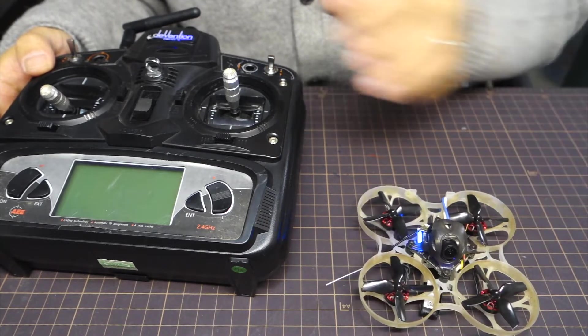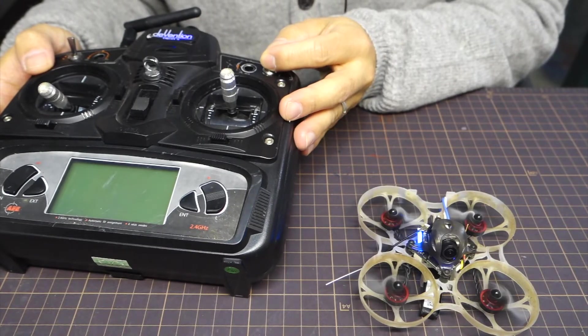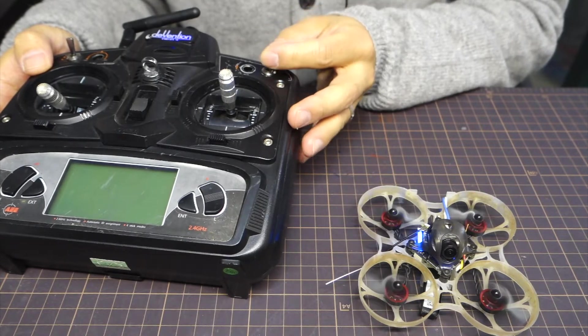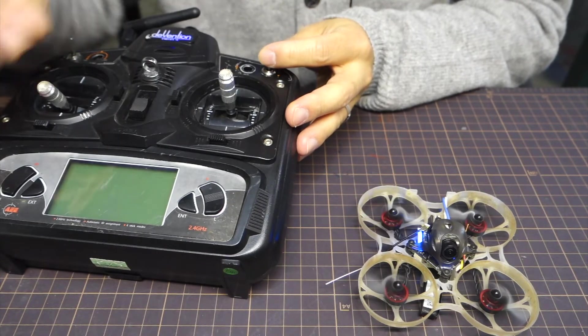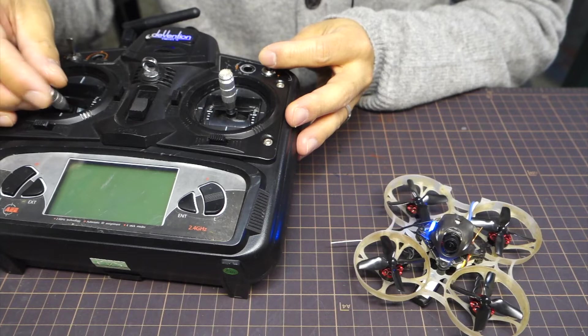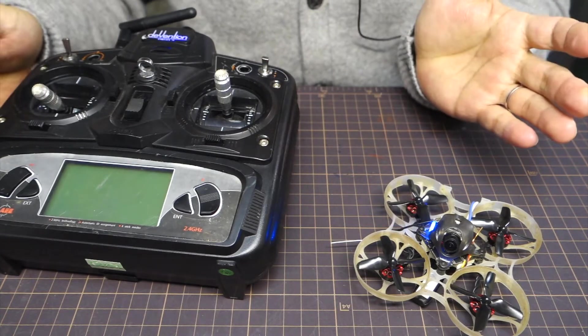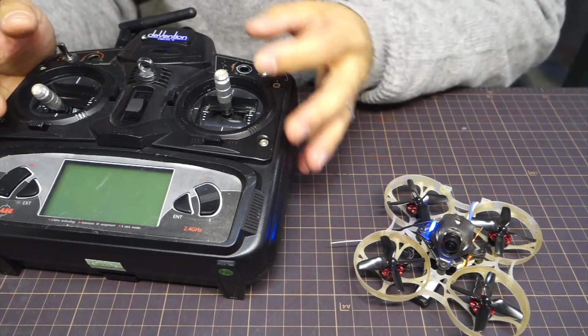The blue LED shows are already binded. And this is the arm switch, throttle, and the mode change.